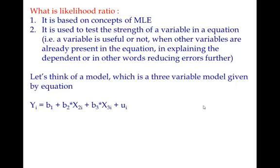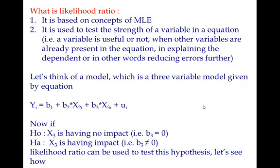One is intercept and other two are x2 and x3. Now, if there is a doubt that x3 is powerful or not in explaining yi, essentially y in presence of intercept and x2, this particular thing can be tested by likelihood ratio. So essentially, if null hypothesis x3 is having no impact when intercept and x2 is already there, and alternate hypothesis says x3 is having impact even in presence of intercept and x2, then this can be tested by likelihood ratio.